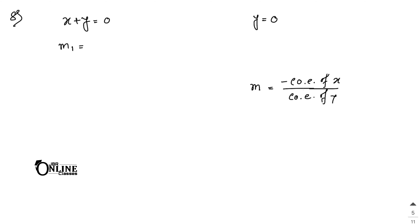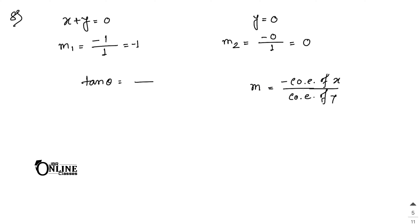For x plus y equal to 0, m1 equals minus 1 by 1, which is minus 1. For y equal to 0, the coefficient of x is 0, so m2 equals minus 0 by 1, which equals 0. Now to find the acute angle between these two lines, we use tan theta equals mod of (m1 minus m2) divided by (1 plus m1·m2).